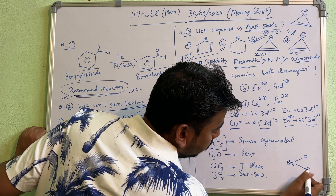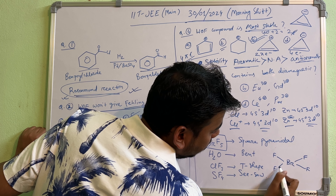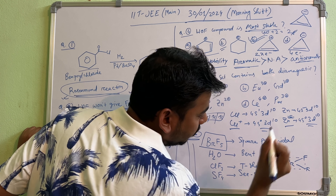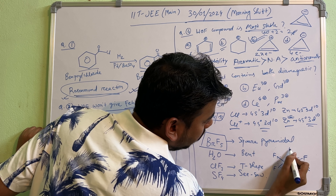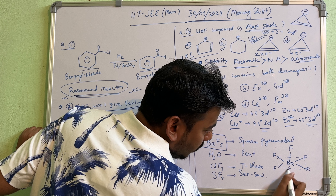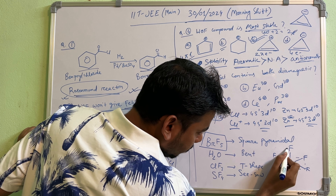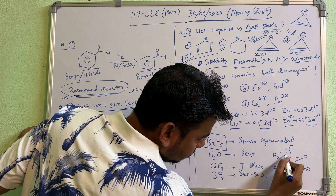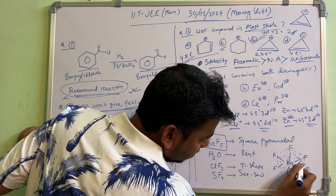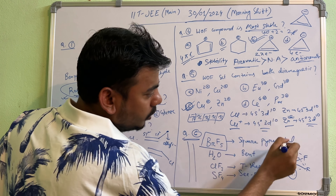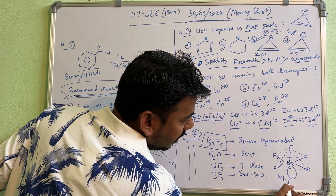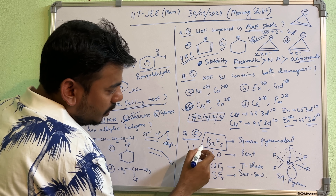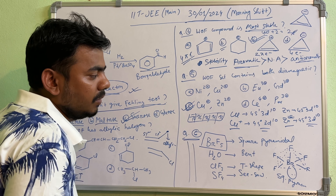For BrF₅, place four fluorines in a square planar arrangement, then one more fluorine above the plane — that gives a square base with one fluorine on top. The one lone pair goes below in the remaining position. This square pyramidal arrangement — four fluorines in the base plus one on top — gives BrF₅ a square pyramidal shape.